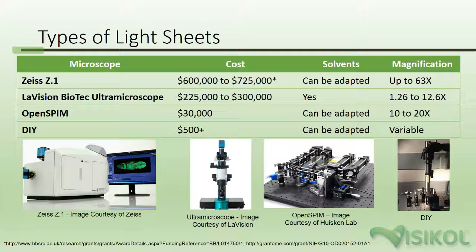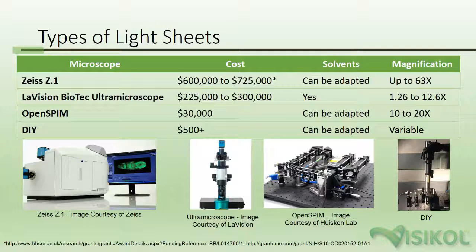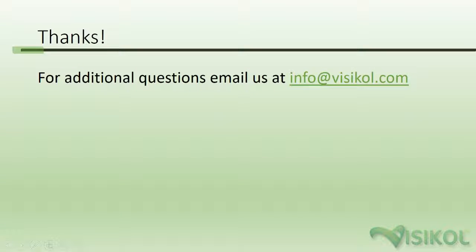The Zeiss Z1 is a top-of-the-line device for light sheet imaging in general, but has numerous features that you do not need if you are only interested in imaging cleared tissues. Because of the high cost of commercially available devices, researchers have developed DIY light sheet microscopes that can be built for as little as $500 and generate 3D renderings of fluorescently labeled cleared tissues. One of these projects is the OpenSPIM project, which is a collaboration effort to build light sheet microscopes. If you have any additional questions, please reach out to us at info@Visikol.com. Thank you.